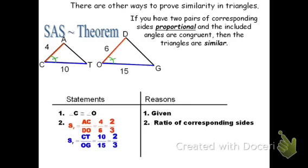When we name it, we just have to pick an order that matches. If I use triangle ACT, then I'd have to go triangle DOG. If I go the other way and say triangle CAT, then I'd go ODG. I just have to make sure my corresponding vertices match. So I'll go with triangle ACT — top, left, right — so the matching pieces on the other figure would be D to O to G. And again, this is by SAS Similarity Theorem.